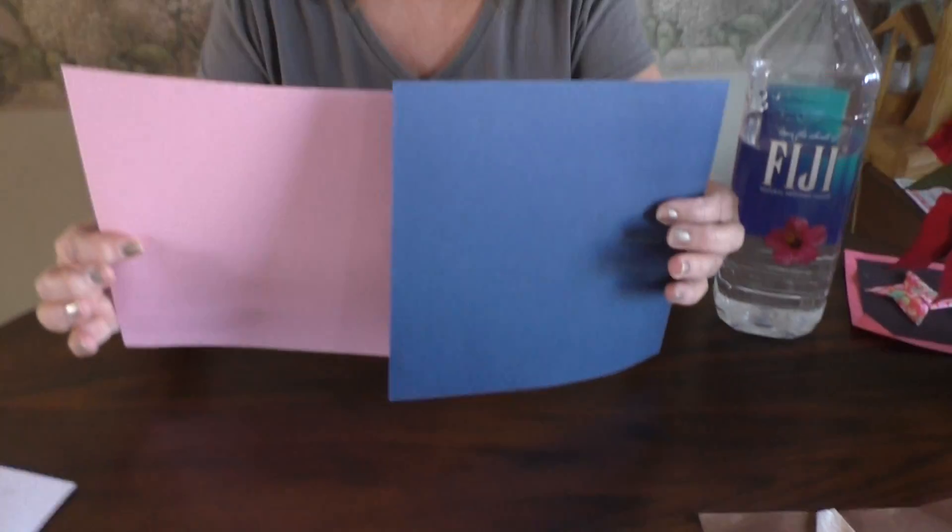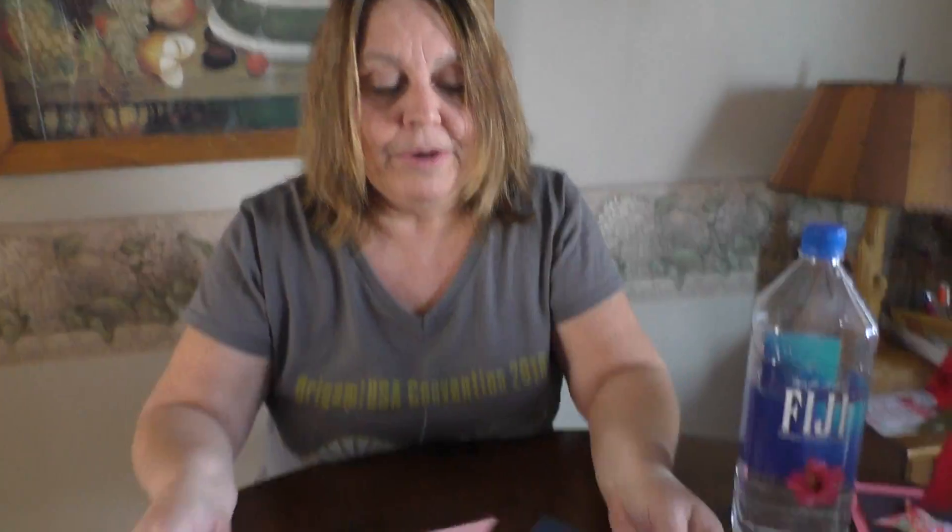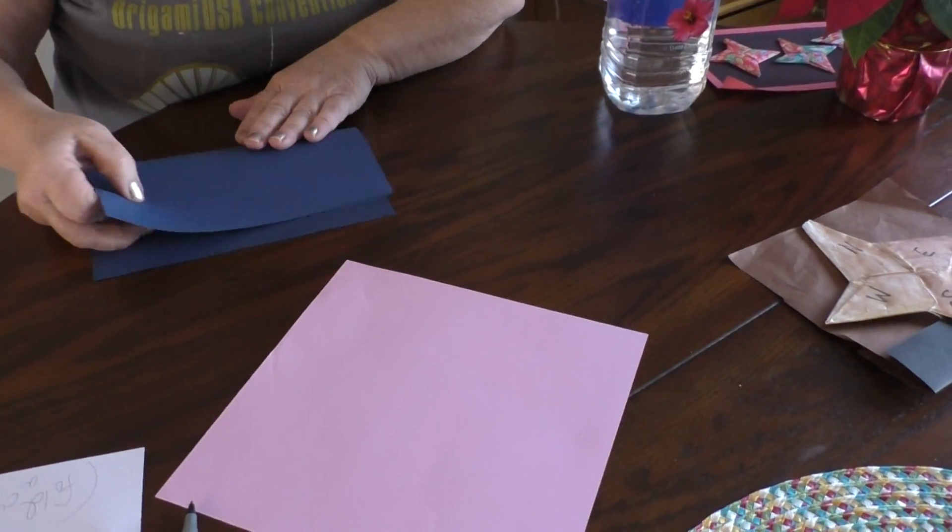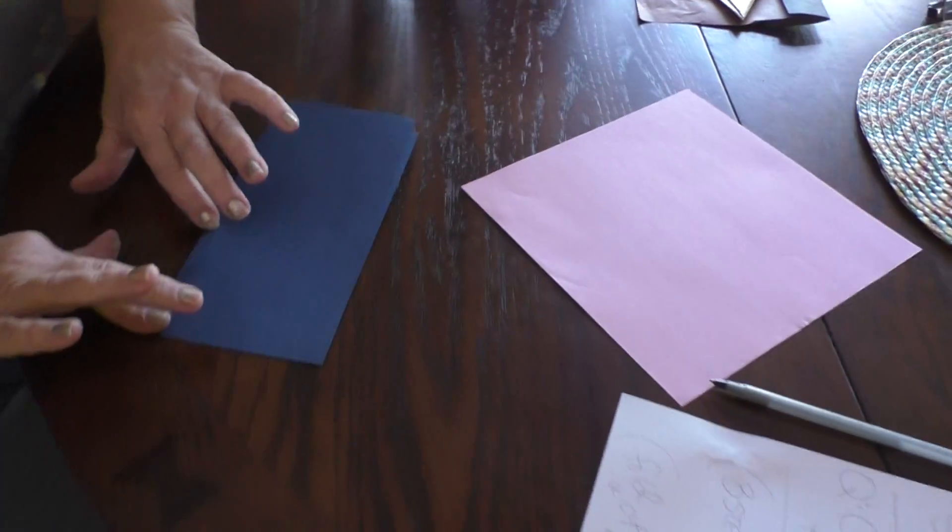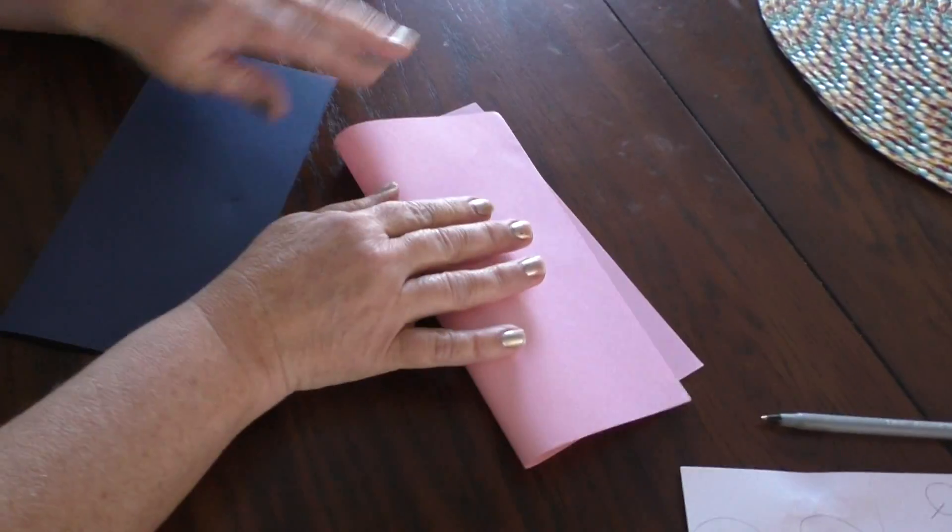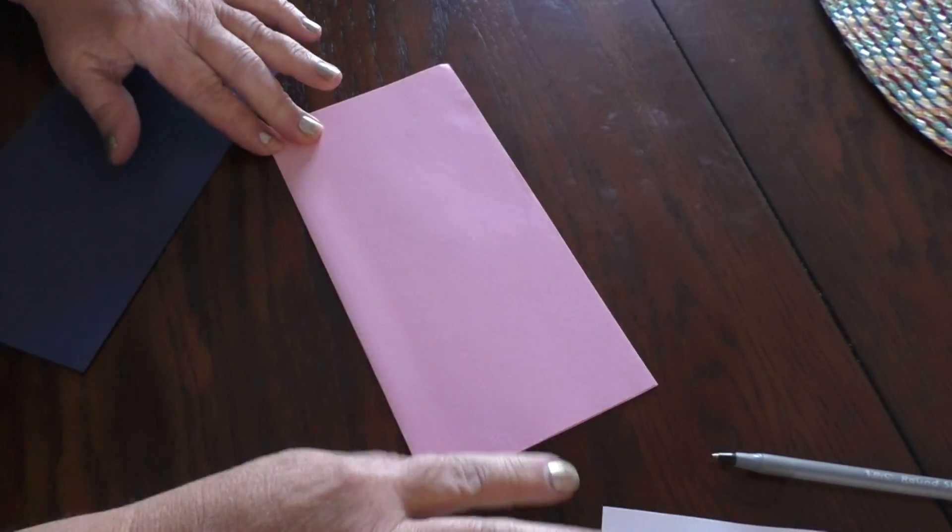First, what you need to do is take two different colors of paper, nice square paper, and I'm going to fold each sheet in half because we're going to make two...